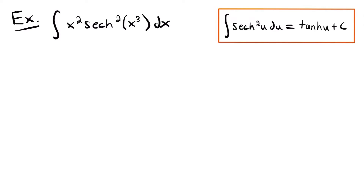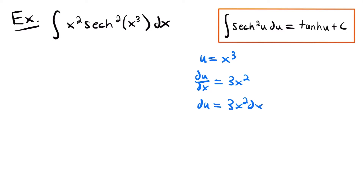So u = x³, and by the power rule, du/dx = 3x². Solving for du gives du = 3x² dx. Whatever du equals must be found within the integral; we're looking for 3x² dx, but we only see x² dx — there's no constant multiple of 3. To adjust, we divide both sides by 3, giving du/3 = x² dx. Now we have a term of du equal to something we can find in the integral.